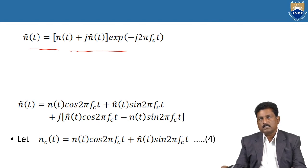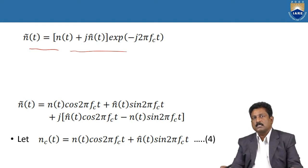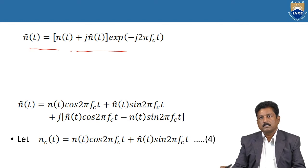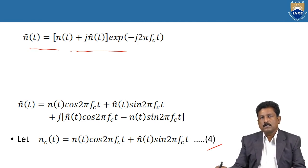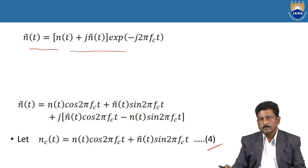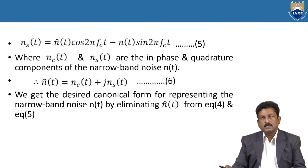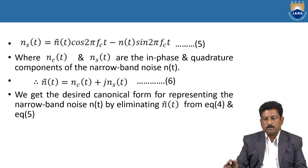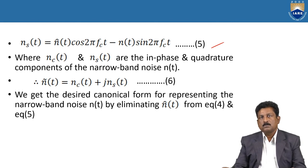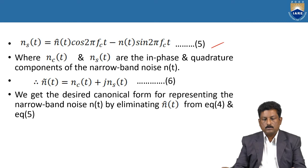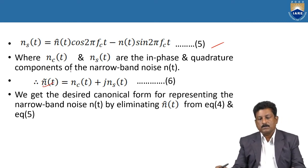These are the expressions for n̄(t). We let: n_c(t) = n(t)·cos(2πfc·t) + n̂(t)·sin(2πfc·t) — Equation 4, and n_s(t) = n̂(t)·cos(2πfc·t) − n(t)·sin(2πfc·t) — Equation 5. Here, n_c(t) and n_s(t) are the In-Phase and Quadrature-Phase components of the Narrowband Noise n(t). Overall, n̄(t) = n_c(t) + j·n_s(t).